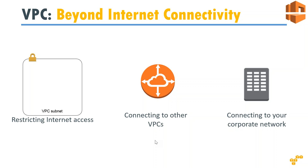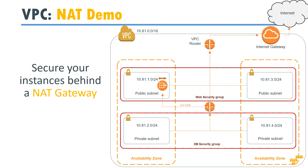We are going to look at NAT instances to provide internet access to your private instances. Here is a simple scenario: there is a VPC at 10.81.0.0/16, which gives you the entire range. Inside that there are two availability zones — one on the left and one on the right — and each availability zone has two subnets: one public subnet and one private subnet.